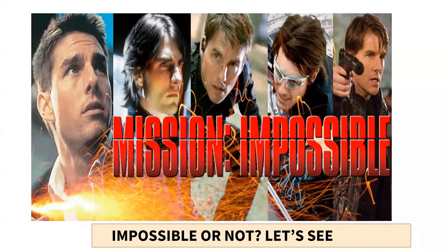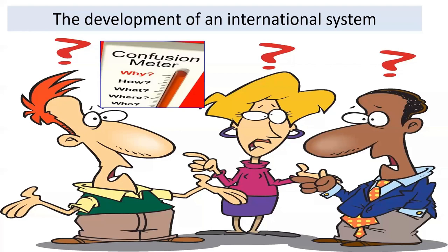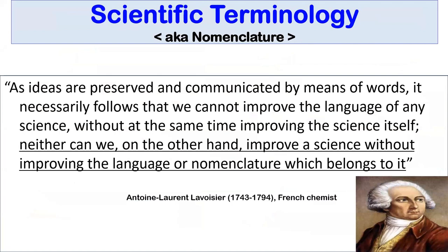When we started to think about this classification system, it seemed like a mission impossible. But nothing is impossible. So it was for the Milan system, which was published in February 2018. Why a classification system for salivary cytology? When we started thinking about this in 2015, we already had different classification systems for thyroid, urine, and breast. So we started to think about a classification for salivary cytology as well.